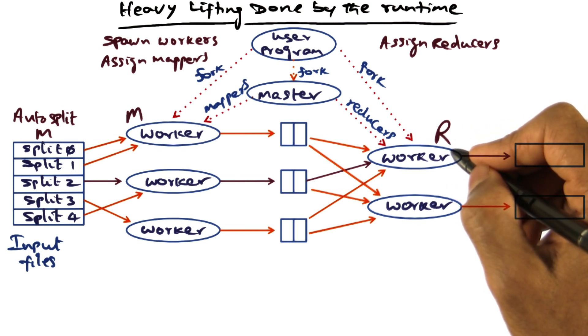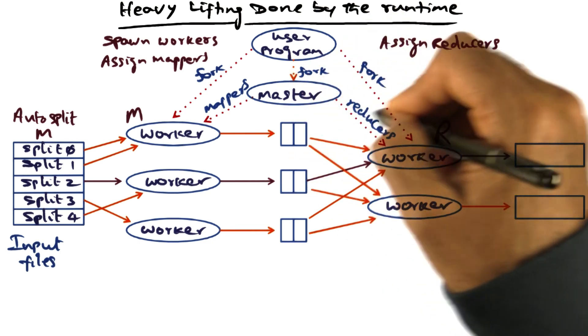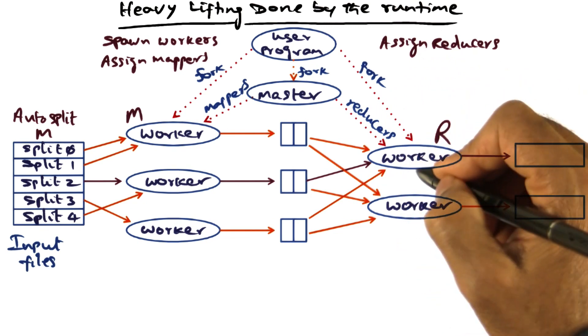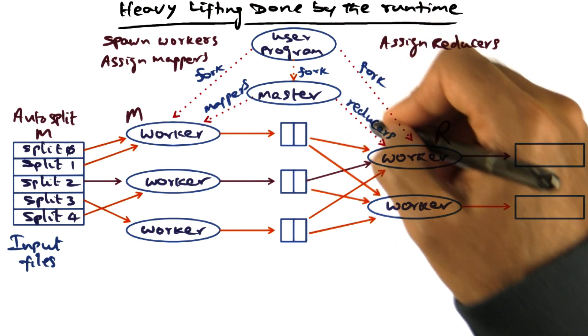That's the number of splits that the user is specifying, and that parameter is going to be used by the master to assign some number of workers as reducers.